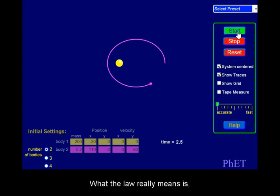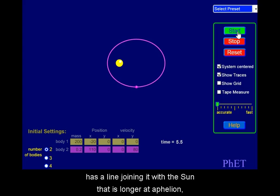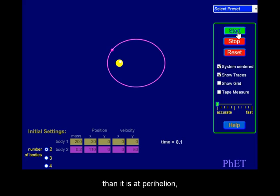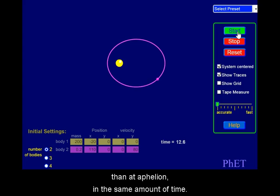What the law really means is, because the planet has a line joining it with the Sun that is longer at aphelion than it is at perihelion, at perihelion it must go a further distance along its orbit than at aphelion in the same amount of time.